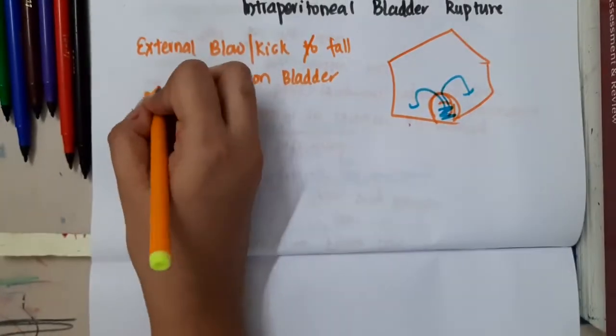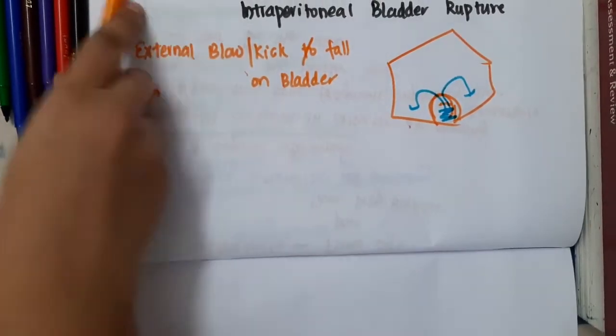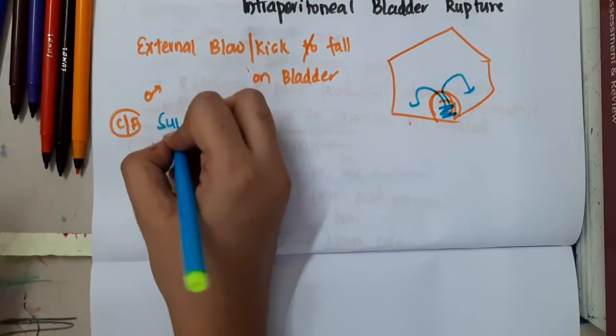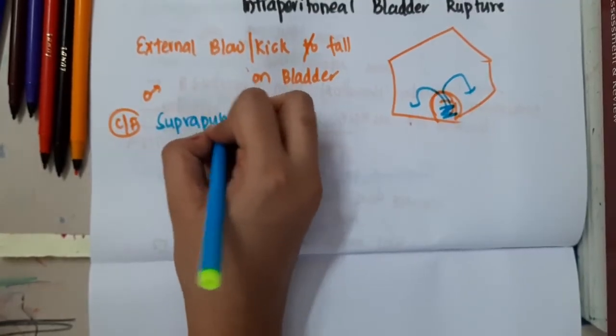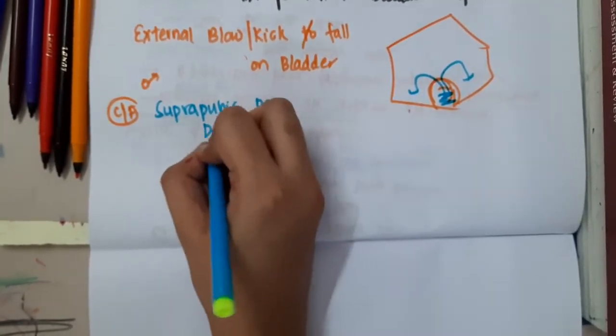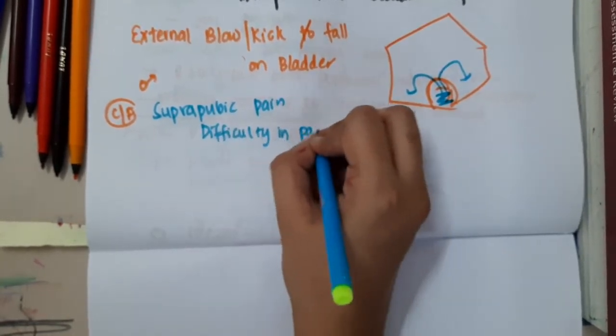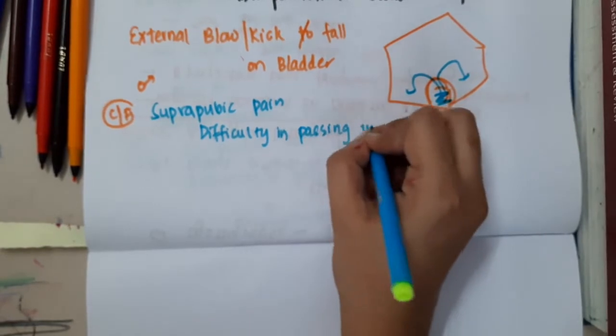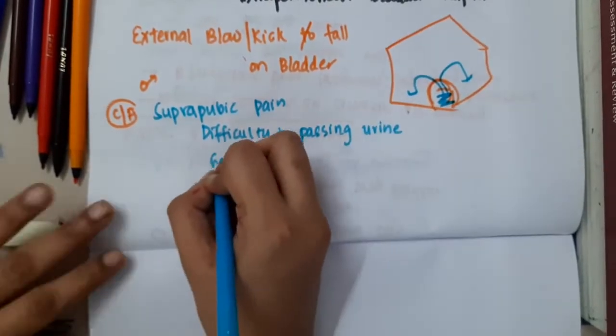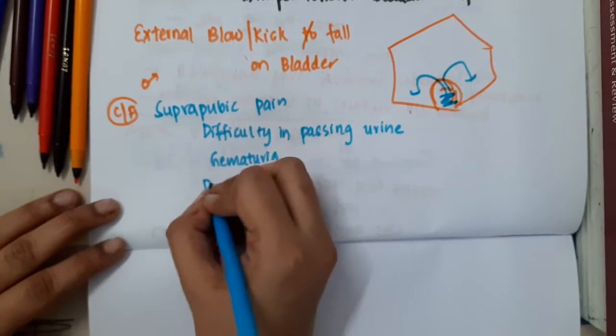It is most commonly seen in males. The clinical features include suprapubic pain and difficulty in passing urine. The patient also presents with hematuria and peritonitis.